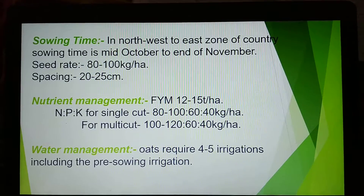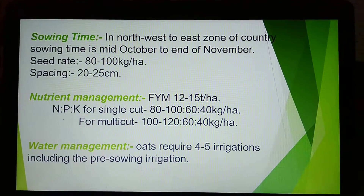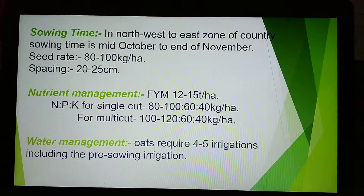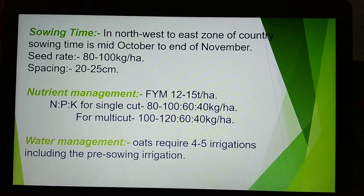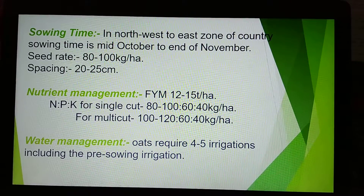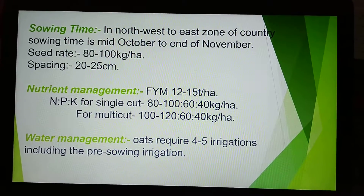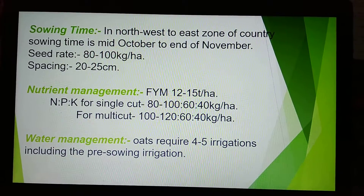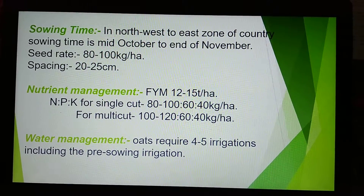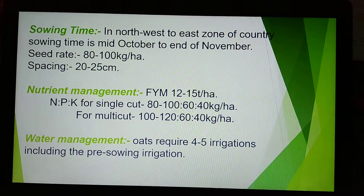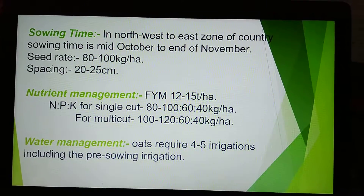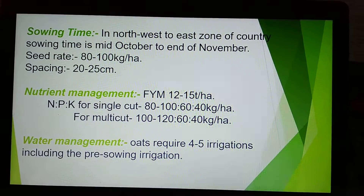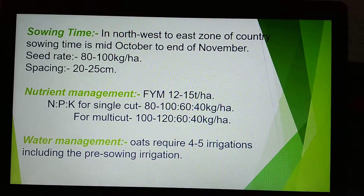Nutrient management: FYM 12–15 tons per hectare. NPK for single-cut varieties: 80–100 kg nitrogen, 60 kg phosphorus, 40 kg potassium per hectare. For multi-cut varieties, more nitrogen is required: 120 kg nitrogen, 60 kg phosphorus, and 40 kg potassium per hectare.